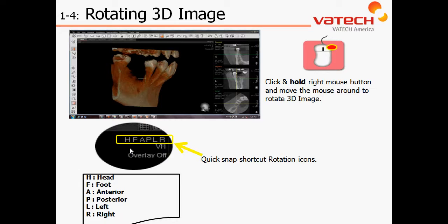We can either use the snap views as indicated in the upper right-hand corner of the pane within our 3D rendering, such as H for head, F for foot, A for anterior, P for posterior, L for left, and R for right. We also have the ability to hold down the right-hand side of our mouse and move the 3D image simultaneously.